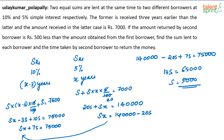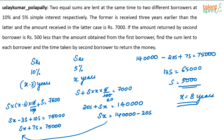So S rupees is 5000. Now that you know S, find X. Put S equals 5000 back: 5000X equals 140000 minus 20 times 5000, which gives 5000X equals 40000, so X equals 8.